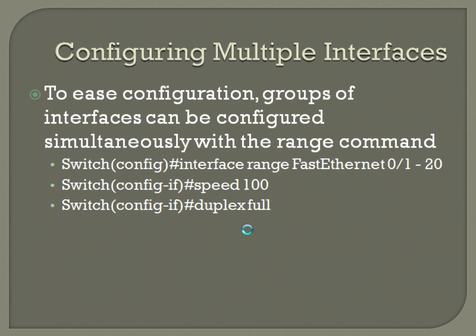From global configuration mode, use 'interface range' — in this case, fast ethernet 0/1 through 0/20, written as '0/1-20'. Once you're in interface configuration mode, you can set speed 100 and duplex full, and every one of those 20 interfaces will have that same speed and duplex setting.